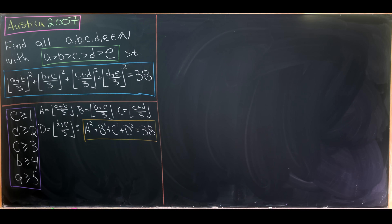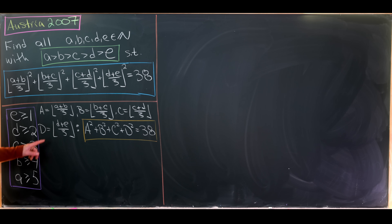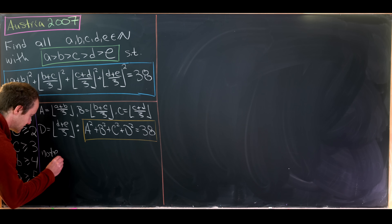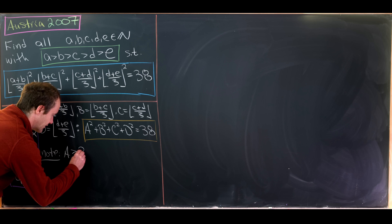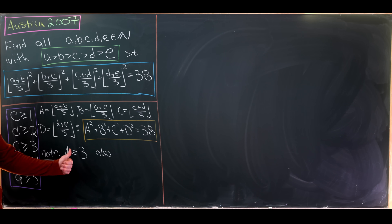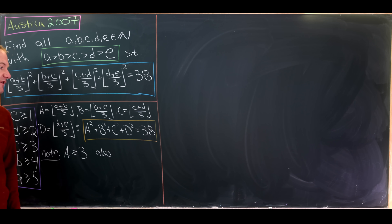Let's make a couple more observations before we get off the ground. Since A ≥ 5 and B ≥ 4, A+B ≥ 9, so (A+B)/3 ≥ 3, and thus capital A ≥ 3. Capital A must also be less than or equal to 5: it can't be 7 because 7² = 49 > 38. It also can't be 6 because 6² = 36, leaving the remaining three squares summing to only 2.